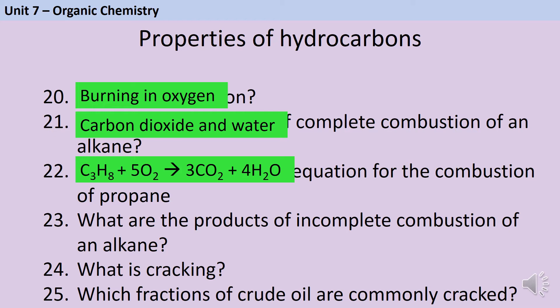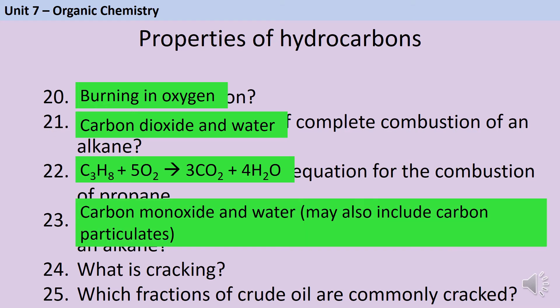When an alkane incompletely combusts you make carbon monoxide and water, although you may also make some carbon particulates if there is a particularly low amount of oxygen available.